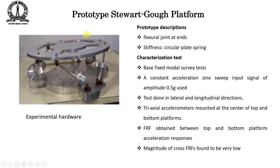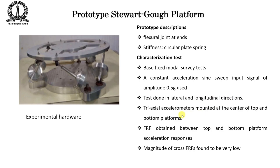A physical Stewart platform was built with a top platform, bottom platform, and flexural joints at each end of the legs — similar to those discussed in the previous lecture. These are hinge joints, and the stiffness elements are circular plate springs in each leg. Characterization tests (base-fixed modal survey tests) were conducted: a constant-acceleration sine sweep input of amplitude 0.5 g was used in lateral and longitudinal directions, with a three-axis accelerometer mounted at the center of the top and bottom platforms.